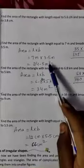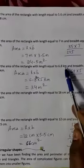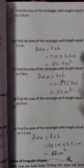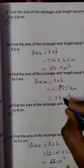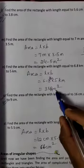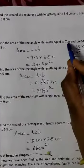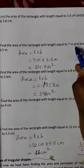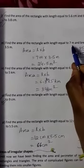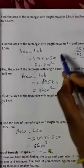Centimeters gives centimeter square. Meters gives meter square. Kilometers gives kilometer square. Always measure units consistently. Here the unit is meter, so the answer is in meter square.